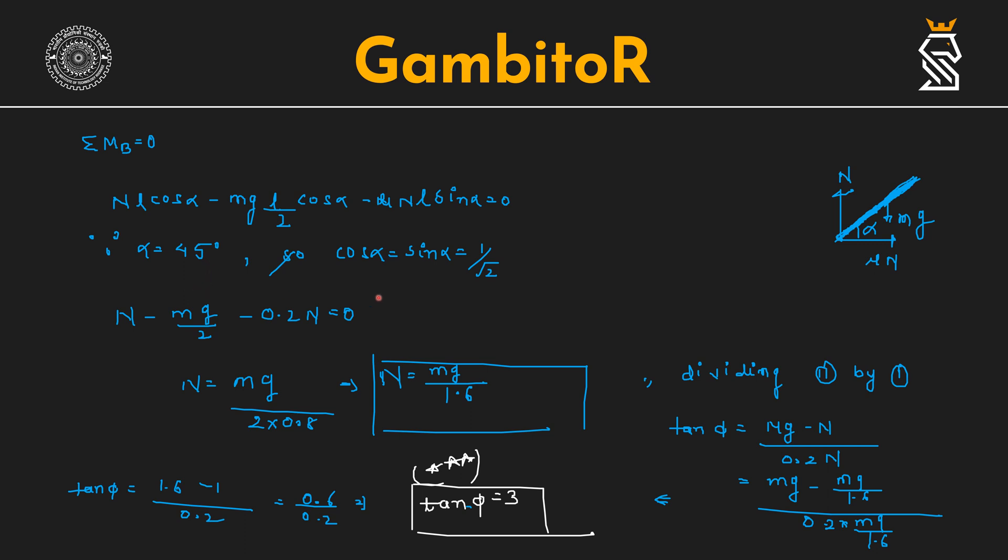Given that we have alpha 45 degrees, so cos alpha equals sin alpha equals 1 by root 2. Now we have L cos alpha sin alpha common, we can cancel L. Mu is 0.2 given in the equation. So N equals Mg by 1.6.